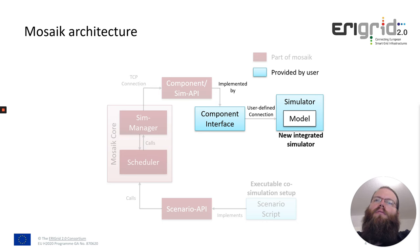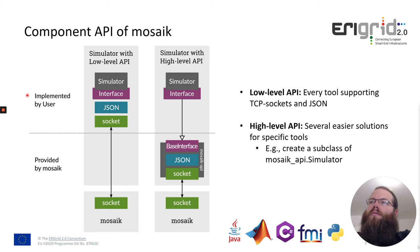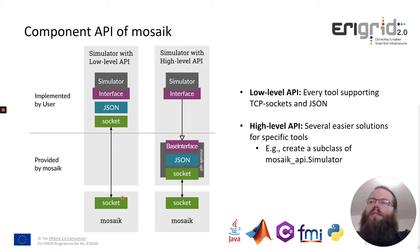Now I want to look a bit more into this component API and how it can be implemented. We have two different parts: on the left hand side is the low level API and the right hand side the high level API. At the top of the figure you see what has to be implemented by the user and what is provided by Mosaic. In the low level API, Mosaic just opens a socket and everything else has to be implemented by the user. The communication takes place using TCP sockets and then JSON messages, which the user would have to implement.